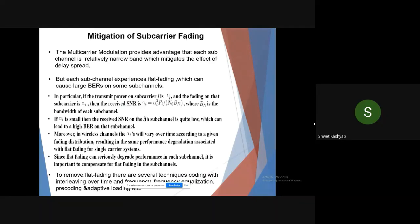Now mitigation of subcarrier fading. MCM provides the advantage that each sub-channel is relatively narrowband, which mitigates the effect of delay spread. But each experiences flat fading and can cause large BER for some sub-channels. In particular, if transmit power of subcarrier is P_i, the fading of that channel is alpha, and received SNR is gamma_i equals alpha squared P_i divided by N_0 B_n, where B_n is the bandwidth of each sub-channel. If alpha is small, then the received SNR of the i-th sub-channel is quite low because it is squared off. This can lead to high BER. Moreover, in wireless channels, alpha will vary over time according to a given fading distribution, resulting in performance variation associated with flat fading. To remove this flat fading, there are several techniques: coding with interleaving over time, frequency equalization, precoding, and adaptive loading.